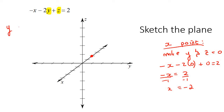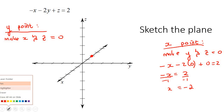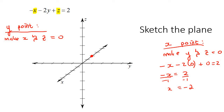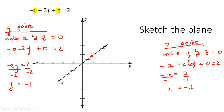To find the y point, you make x and z equal to zero. So that's minus zero minus two y plus zero equals two, giving minus two y equals two. Divide both sides by negative two, and y equals negative one. Positive y is one side, negative y the other, so you put a dot there.